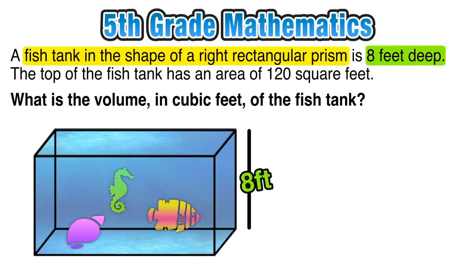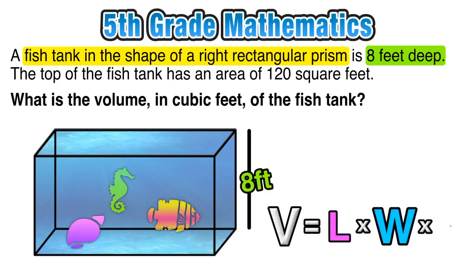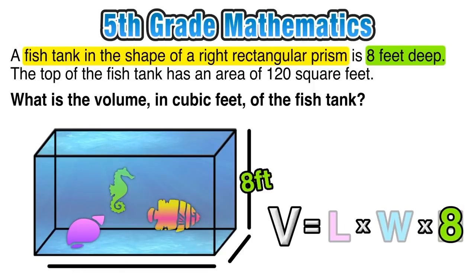Now remember that we wanted to find the volume of this fish tank, and we know that the volume of a right rectangular prism is length times width times height. So far we only know what H is—we only know that the height of the rectangular prism is eight. We don't know the length and we don't know the width.